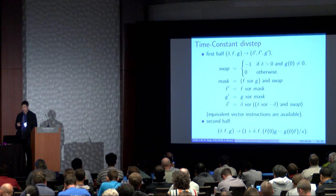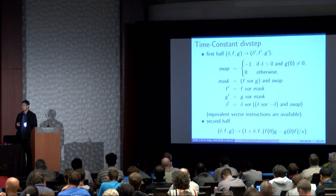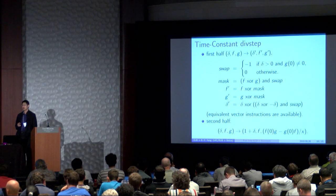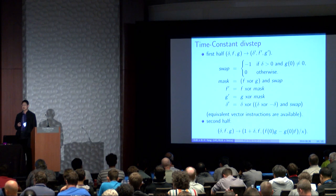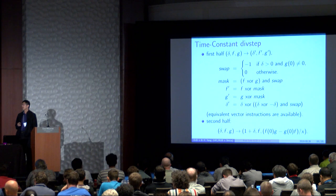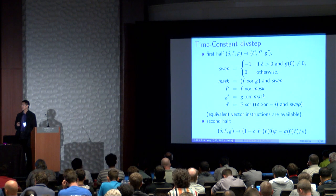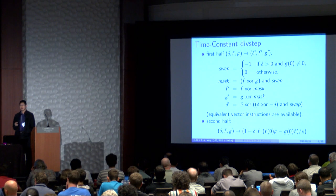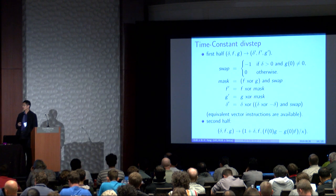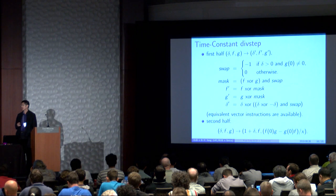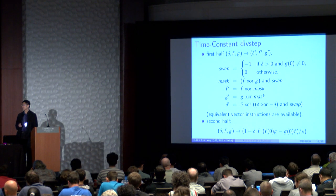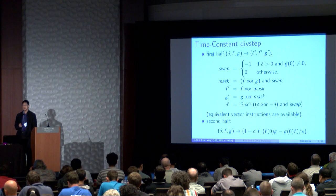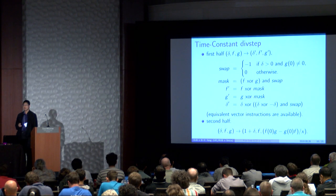So what do we do to get time constant divstep? That's not too hard. And here are the steps to do it. We first make a mask, and we XOR the correct mask to F and G, and we XOR the correct mask to delta, and then there is a uniform second half. And we can do this with BMI2 instructions if necessary.